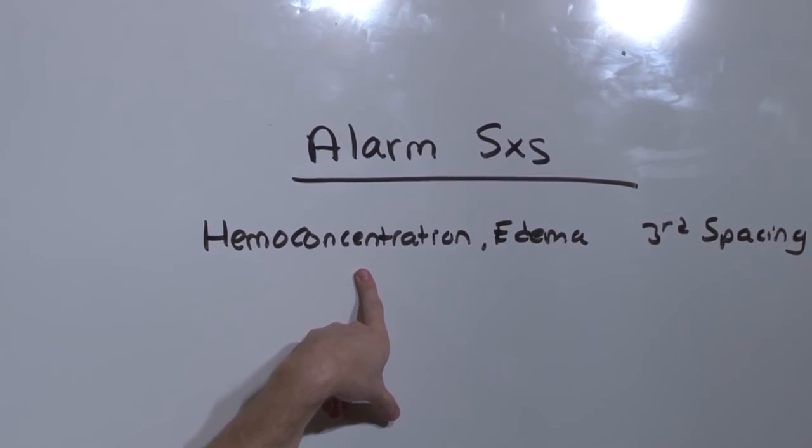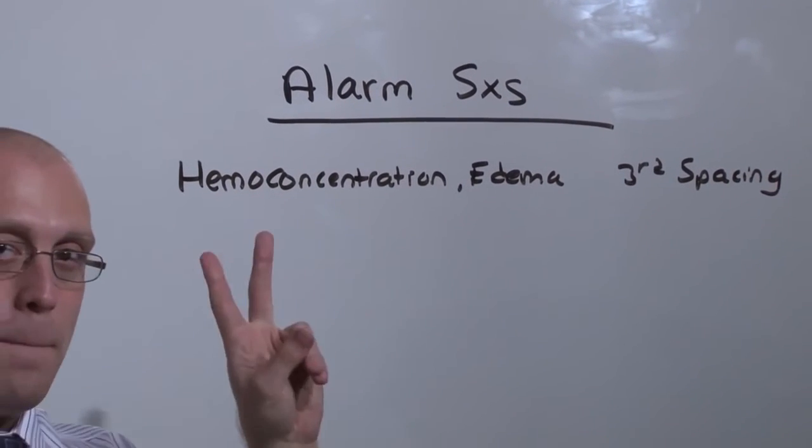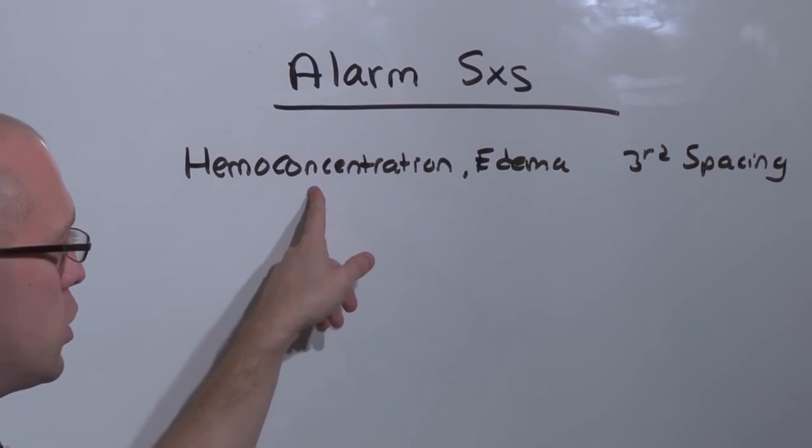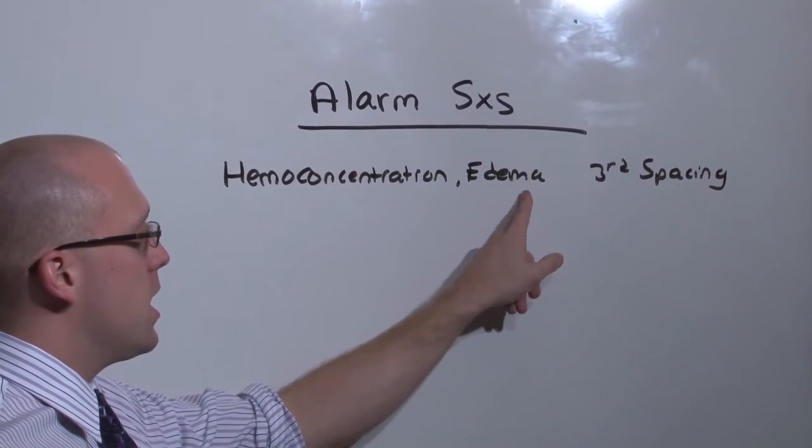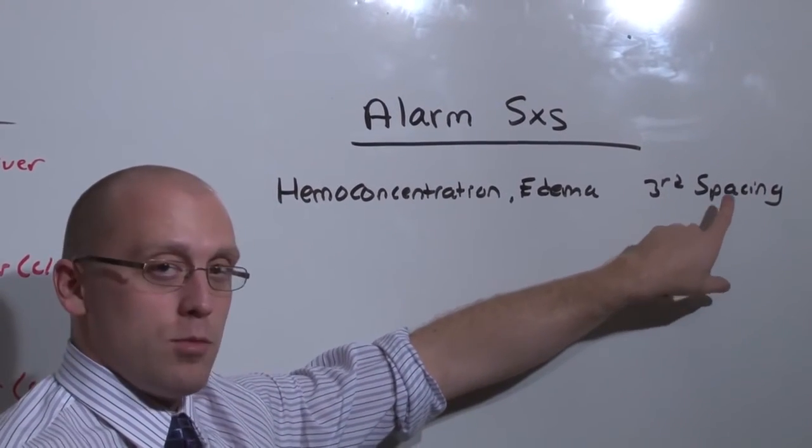A normal hemoglobin for a pregnant female is 10, a matric rate is 30. If she goes back towards normal, then it's a sign of hemoconcentration. And especially in the setting of edema, it's a product of that nephrotic range proteinuria. She may have preeclampsia.